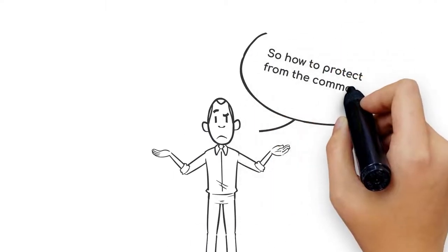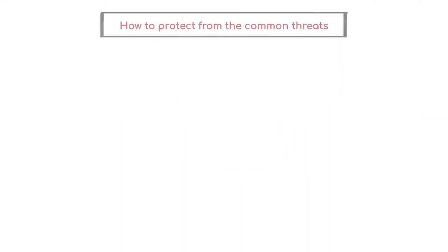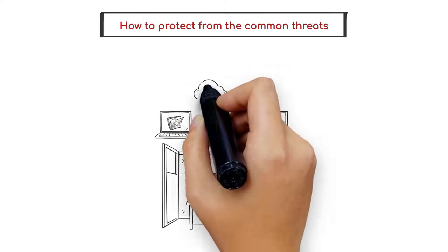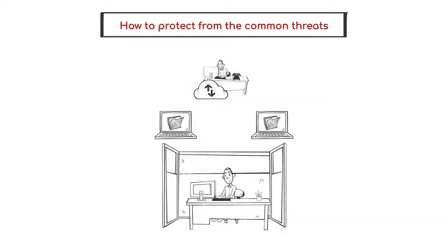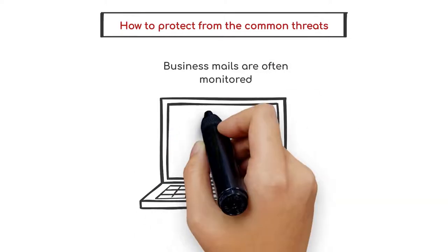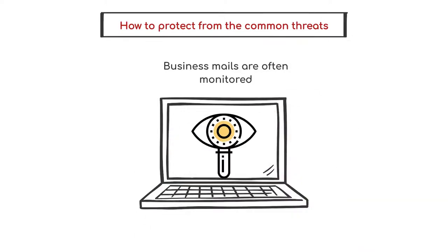So, how do you protect against common threats? Avoid using a personal account for transmitting company data. Make sure that you don't risk your company's security and your job by transmitting sensitive company data via your own personal computer or email address. This includes using your personal email account on the job as well as sending company documents to your personal account. Your company has a right to see everything you send and receive on your professional account. Assume that all your emails are monitored and refrain from sending anything you wouldn't be comfortable with your boss seeing.